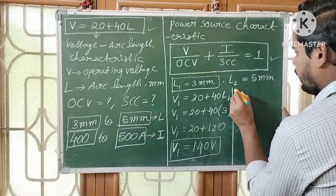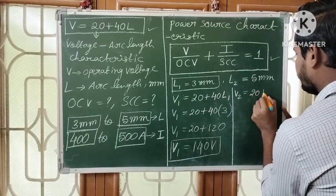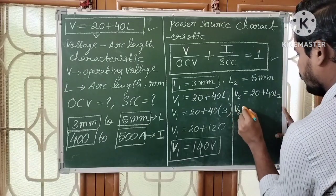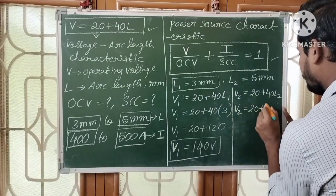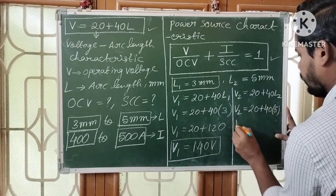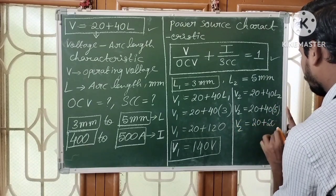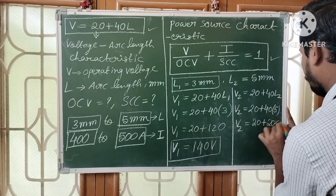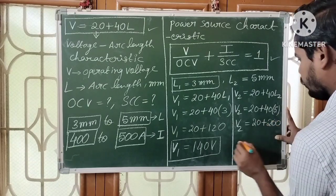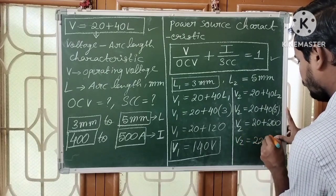Now let us find V2. V2 = 20 + 40·L2 = 20 + 40×5 = 20 + 200 = 220 volts. So V2 = 220 volts.